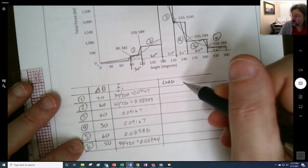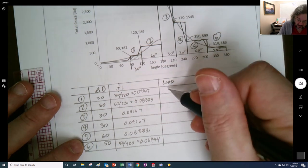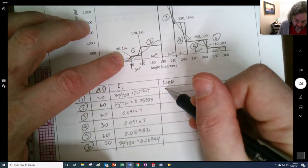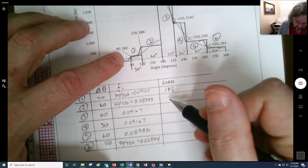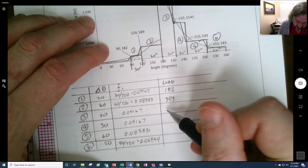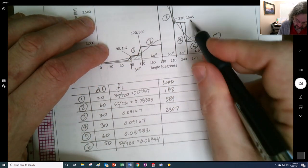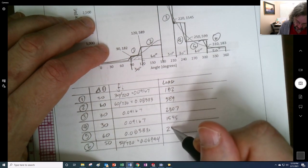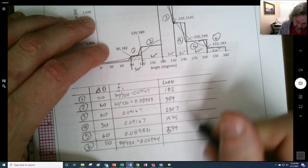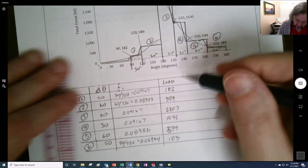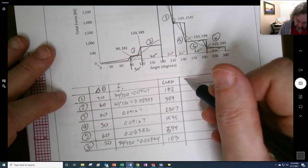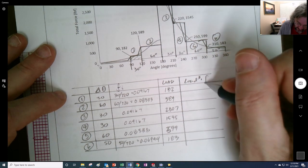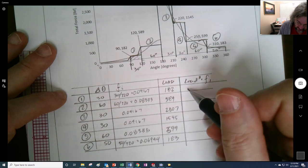Here's the load that we would have at each of these. And these are pounds. So we have 182, we have 589, we have 2807, we have 1545, and then we have 599, and then 183. So I want to take the fraction. We're going to go load to the third times the fraction. And you don't have to write out all of these.